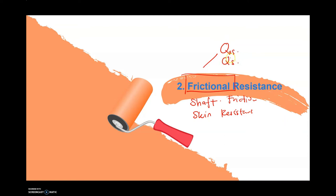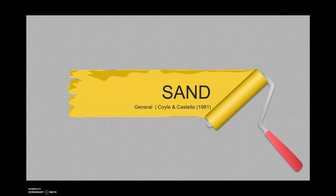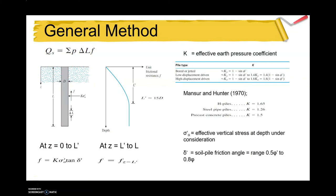The symbols used are Qus or Qs — same meaning. As usual, in determining the pile bearing capacity, we need to consider the condition or type of soil. For sand, we are using two types of equations or methods. The first one is the general method, and the second one is the Cowell and Castello method.